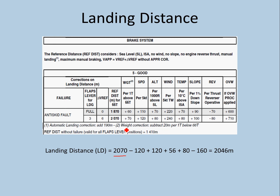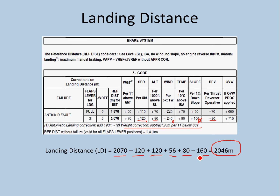Anti-skid fault reference distance: 2070 m. Weight correction: subtract 20 m per 1 ton below 66 tons. Weight is 60 tons, so 6 × 20 = 120 m; minus 120. Speed correction: approach correction was 5 knots, so per 5 knots add 120 m; plus 120. Elevation correction: per 1000 ft above sea level plus 80 m; elevation is 700 ft, so that's 56 m. No tailwind correction. Temperature at 700 ft is approximately 13°C ISA; given temperature is 23°C, so 10° above ISA: plus 80 m. No down slope. Thrust reversers operative — 2 reversers: minus 160 m. Total landing distance comes out to 2046 m.